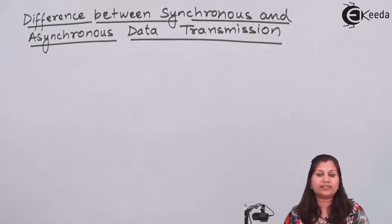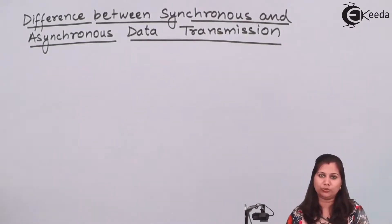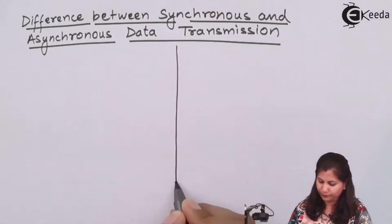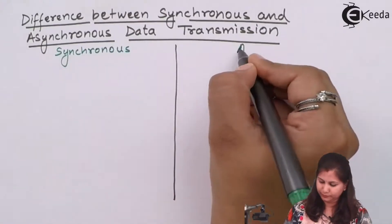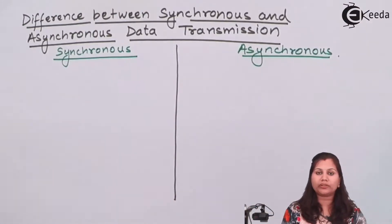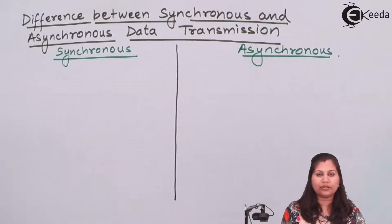Here we will study the differences between these two types — synchronous and asynchronous data transmission. The first and most important difference between the two methods is that in synchronous data transmission a clock pulse is used. Two signals are used: one is the clock pulse and the second is the data signal.